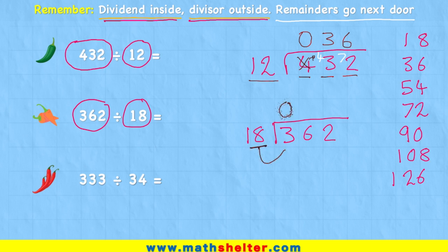How many 18s are there in 3? Well, 0. Roll the 3 across. How many 18s are there in 36? Well, I can see 1, 2. I have a perfect group of 2, so nothing to roll over.